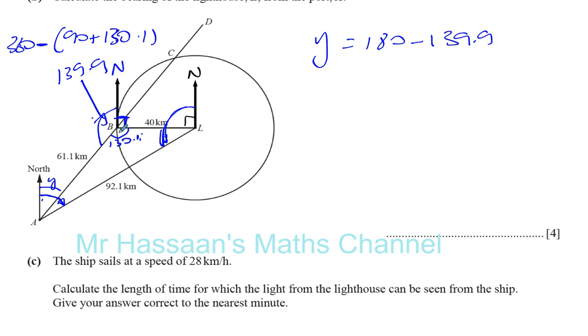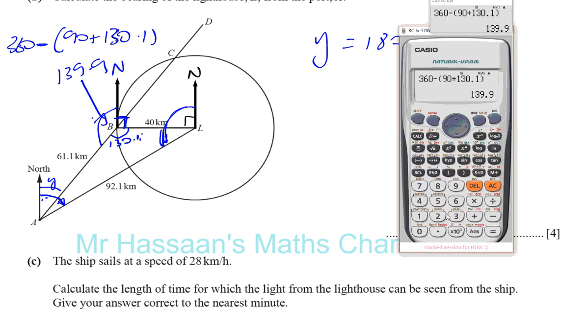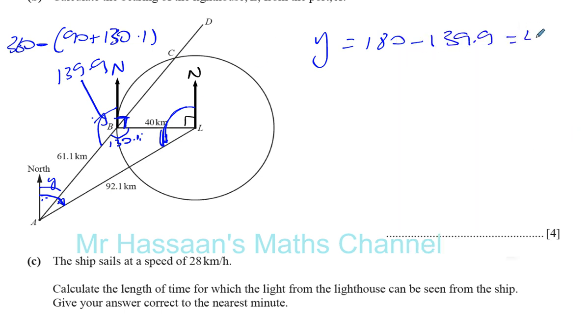These two angles and that angle add up to 360, so I can find what this is. And this is 180 minus that angle. So you're going to have Y is equal to 180 minus 139.9. So you're going to do 180 minus your answer, which gives you 40.1 degrees. So I know that Y is 40.1. That's that part here. Now I've got to find this angle over here.